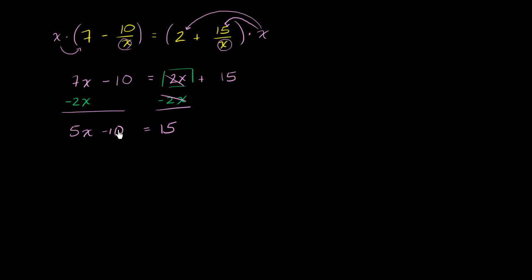Now we can get rid of this negative 10 by adding 10 to both sides. So I can add 10 to both sides, and I am left with 5x, these negate each other, is equal to 25. And this is the home stretch. You see where this is going. You can divide both sides by 5, and we are left with x is equal to 5.